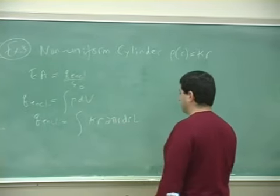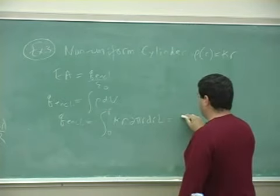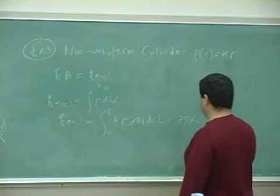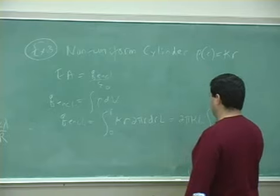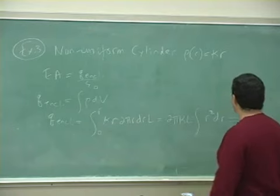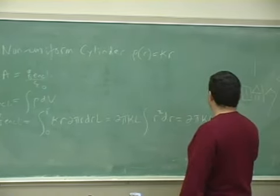So dV is 2πr dr times L, from 0 to r. And you get here 2πκL times integral r squared dr, which is 2πκL r cubed over 3.